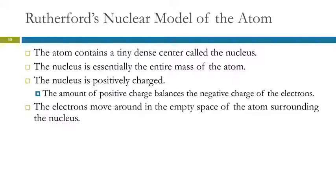So now let's try to explain why this is happening. Rutherford's nuclear model of the atom. The atom has a tiny, dense center called the nucleus, and that's where almost all the mass is. The protons and the neutrons are in there. The nucleus is positively charged. The amount of positive charge balances the negative charge of the electrons. So the number of protons and electrons are equal so that the atom has a neutral charge. And then the electrons are moving around in the empty space of the atom surrounding the nucleus.